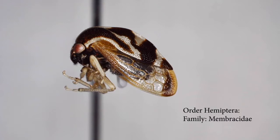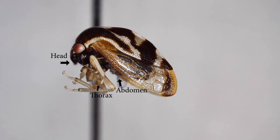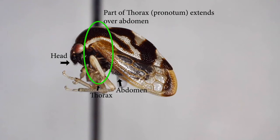This Membracidae makes it a little bit more difficult to see all three parts. It's relatively easy to see the head and the abdomen on the underside, but the thorax is a little bit harder to see. What's complicated here is that a part of the thorax actually extends over the abdomen, which is quite common in the Membracidae, or the treehoppers.